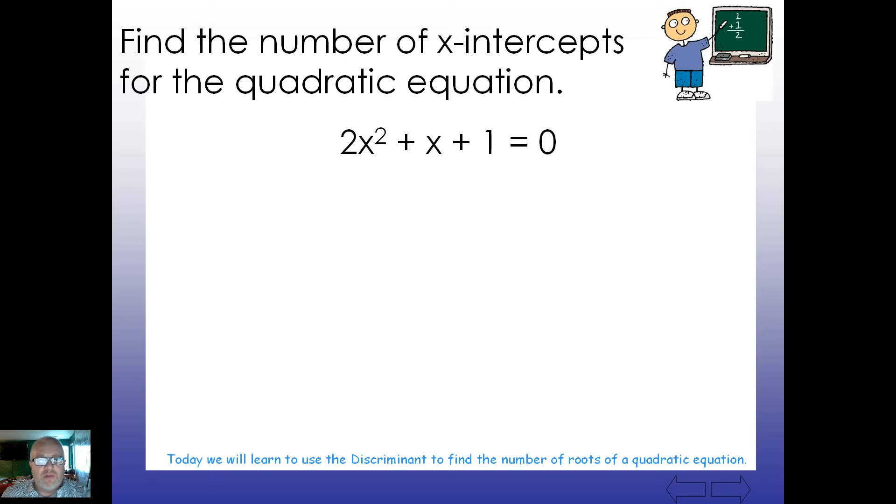Find the number of x-intercepts for the quadratic equation. So, here we go. It's already set in standard form for us, so that's nice and comfortable. 2x squared plus x plus 1. What is our values for a, b, and c? So, it looks like our values for a there should be 2, right? What's our value for b? 1. And our value for c is also 1.